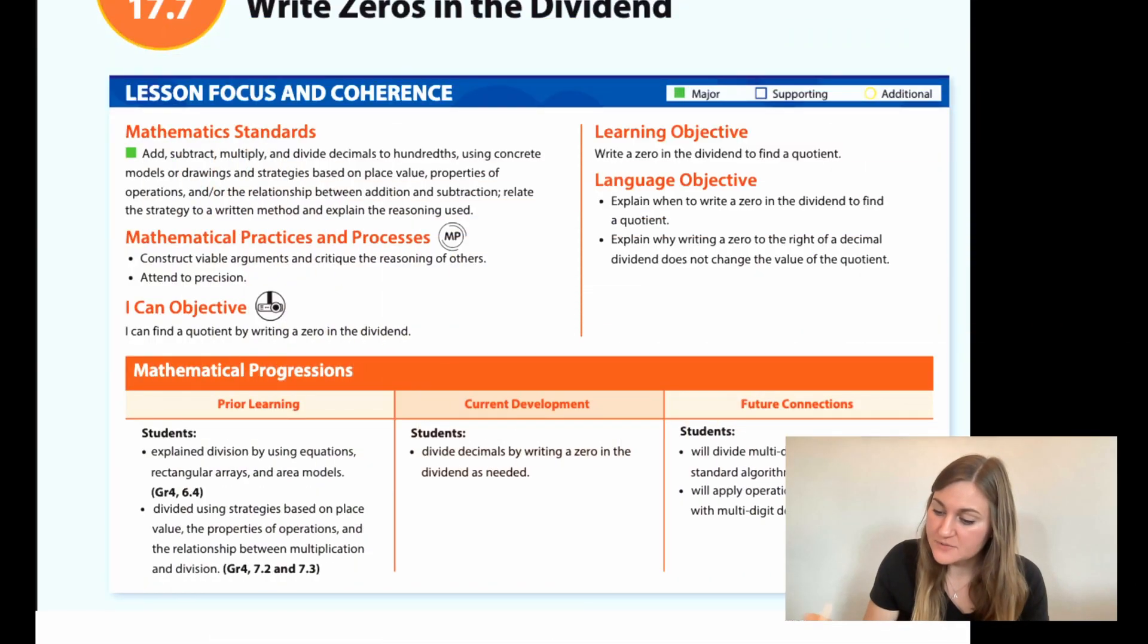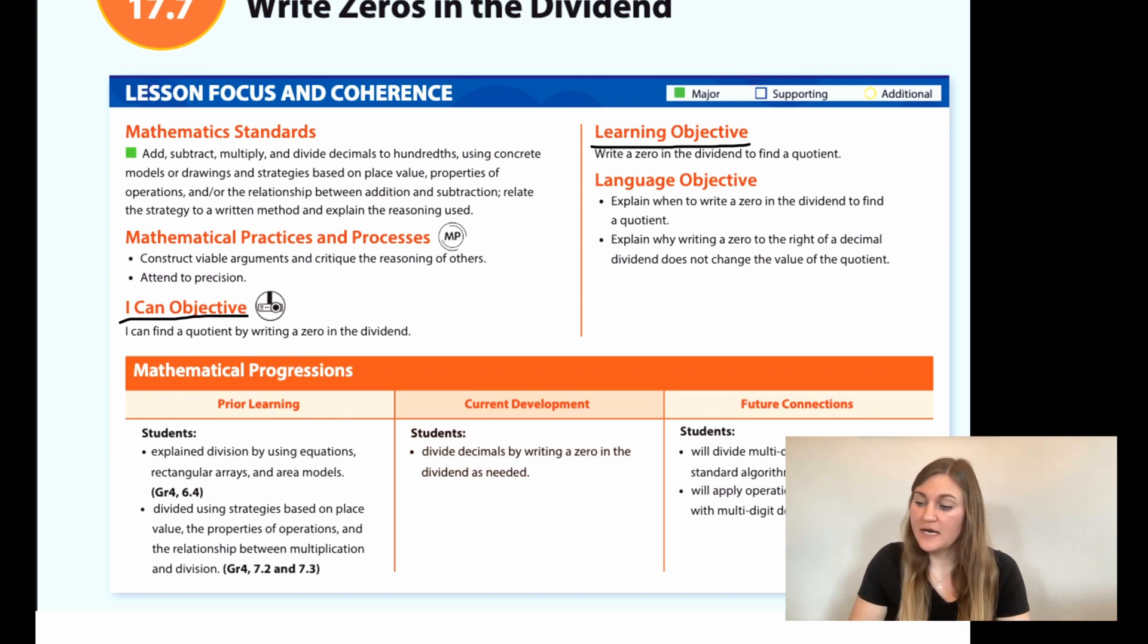Hi, I'm Natalie Rhodes and this is IntoMaths 5th grade, Module 17, Lesson 7. I'm going to start off by going over the I can objective. It says I can find a quotient by writing a zero in the dividend.